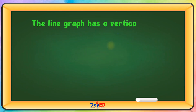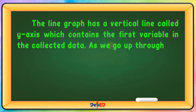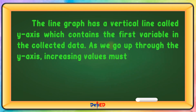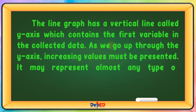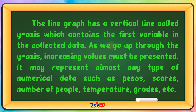The line graph has a vertical line called y-axis, which contains the first variable in the collected data. As we go up through the y-axis, increasing values must be presented. It may represent almost any type of numerical data such as pesos, scores, number of people, temperature, grades, etc.